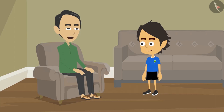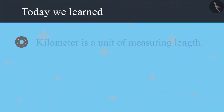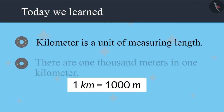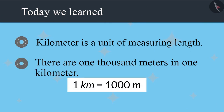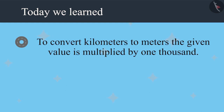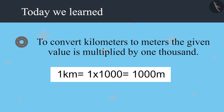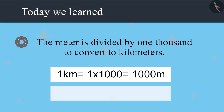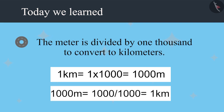Now check on the internet what all is worth visiting in Nainital and start planning so we don't miss anything. Today we learned that kilometer is a unit of length measurement. There are 1,000 meters in a kilometer. Multiply by 1,000 to convert kilometers into meters, and divide by 1,000 to convert meters into kilometers.